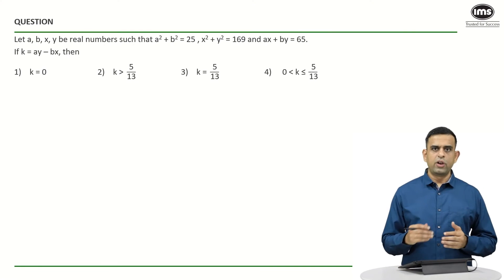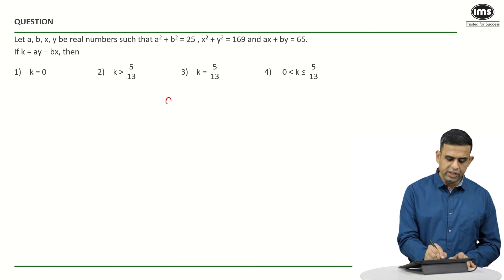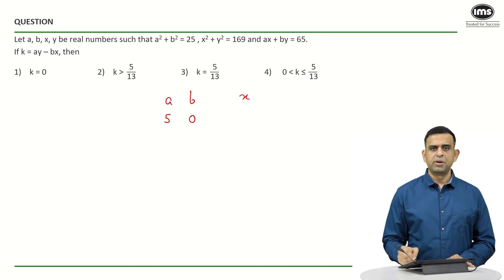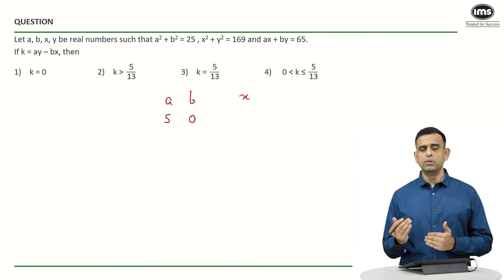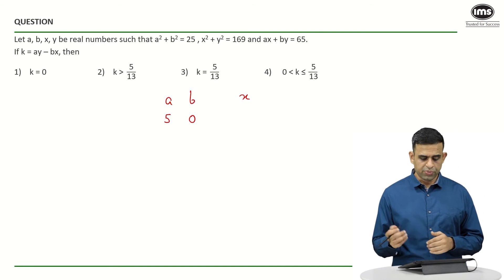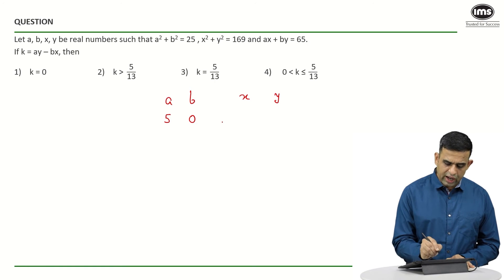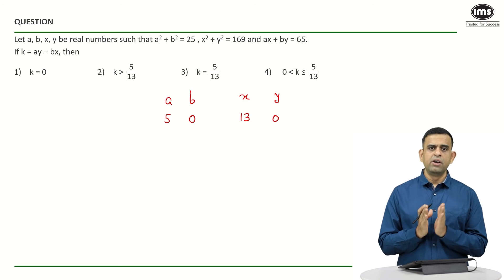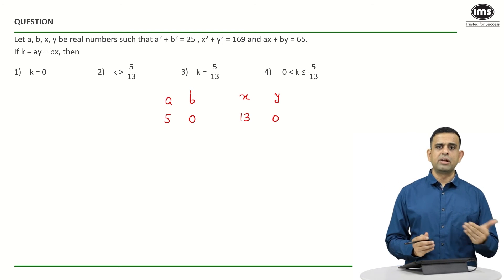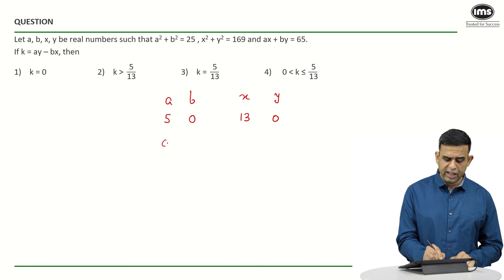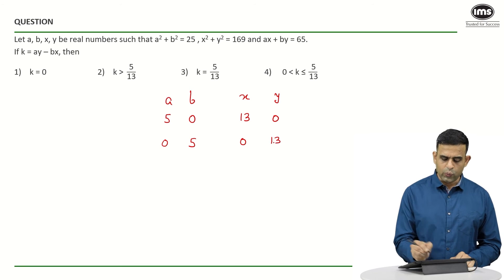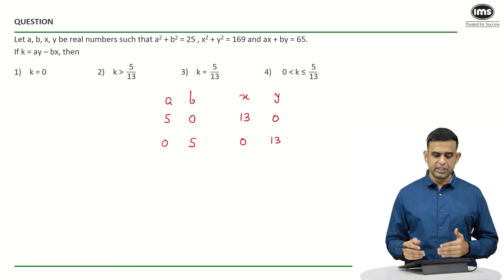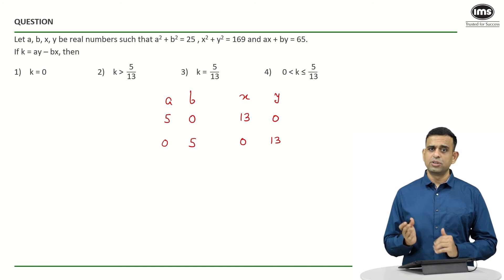Now let's look at another way — hit and trial. Since a² + b² = 25 = 5², I can take a = 5 and b = 0. Similarly, since x² + y² = 169 = 13², I can take x = 13 and y = 0. Checking the third equation: ax + by = 5×13 + 0×0 = 65. ✓ Alternatively, one could take a = 0, b = 5, x = 0, y = 13, giving ax + by = 0 + 5×13 = 65. ✓